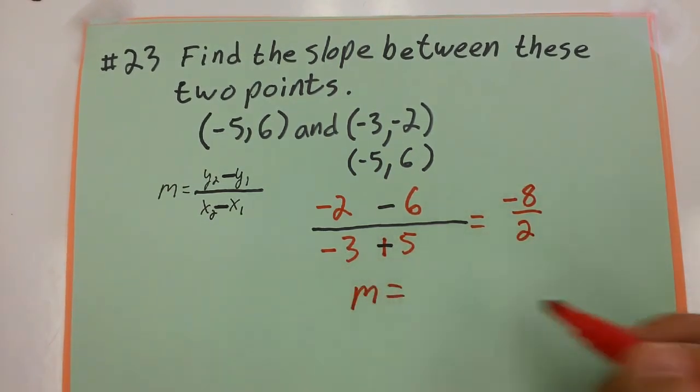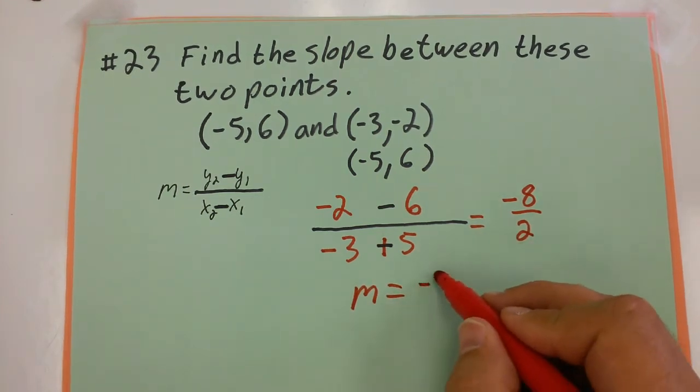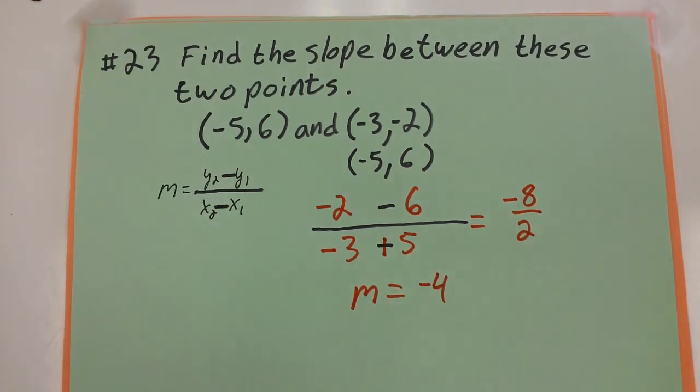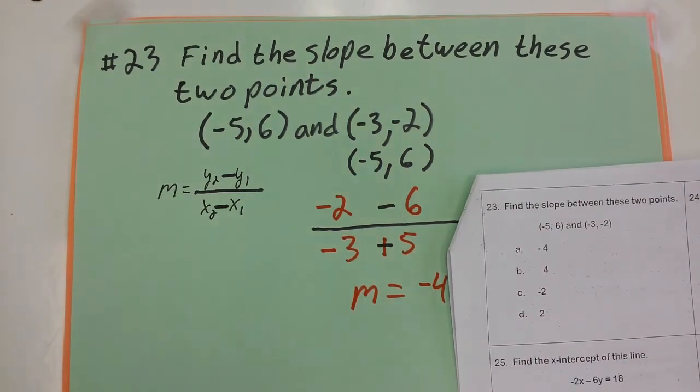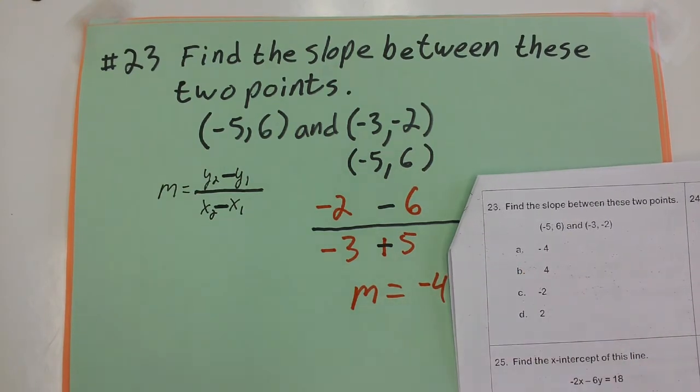So the slope of this line is going to equal negative 4. And the choice on the PERT practice test for number 23, choice A, is negative 4. It lines up.